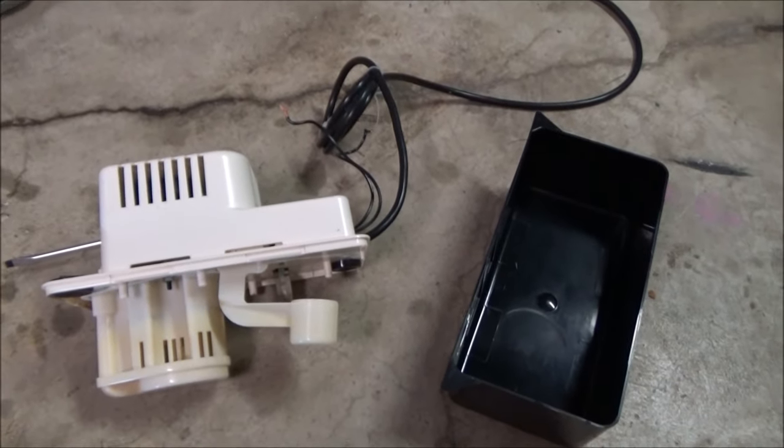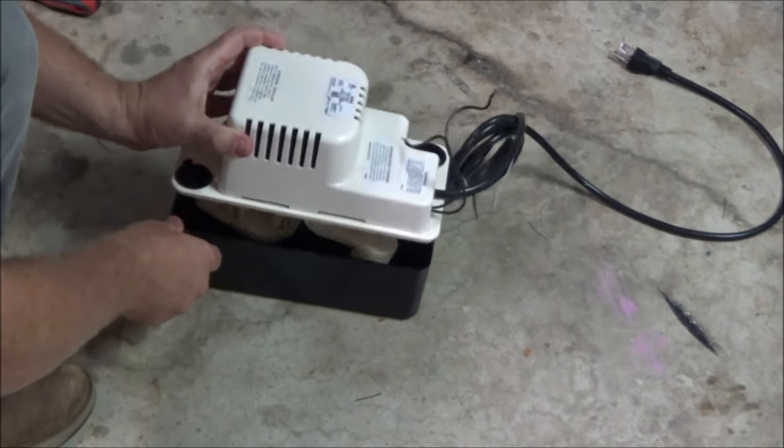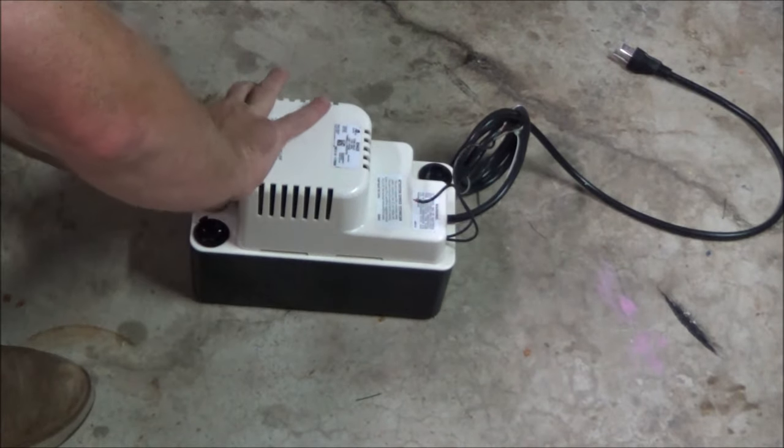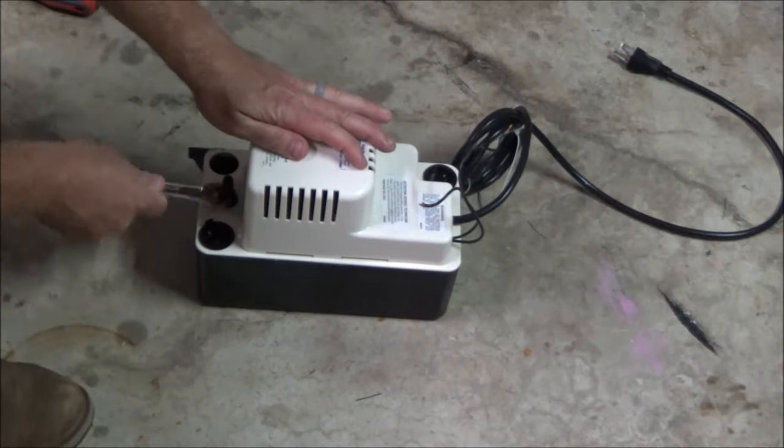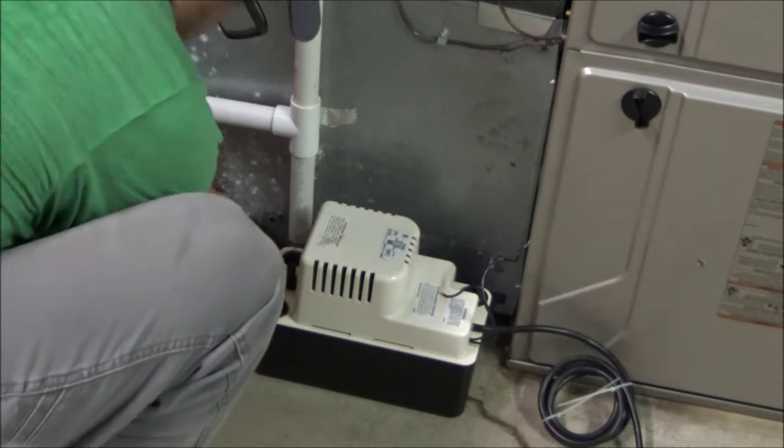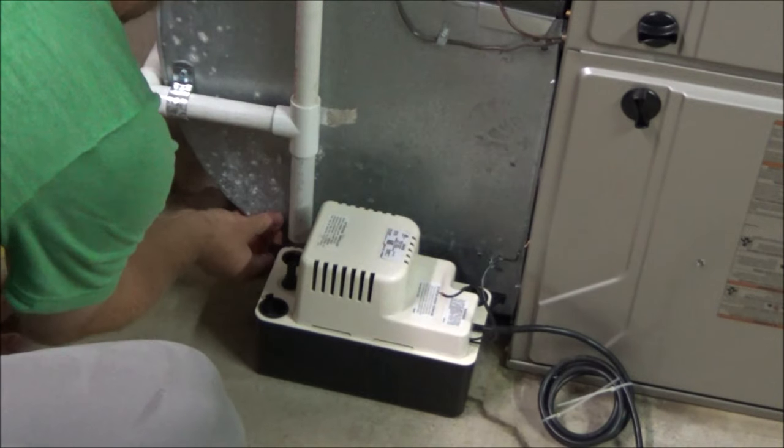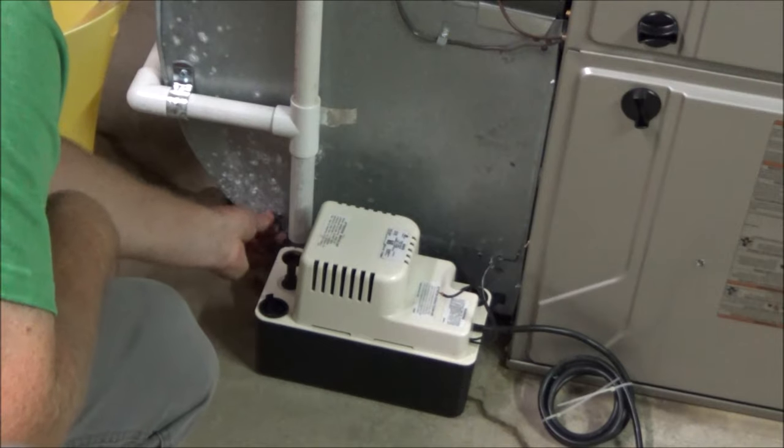All right, let's go ahead and put this thing back up. I'm going to put this back together. Put the check valve back in. I'm going to put these screws partially in and then hang the hooks on the side of the tank on the screws and then tighten them up.